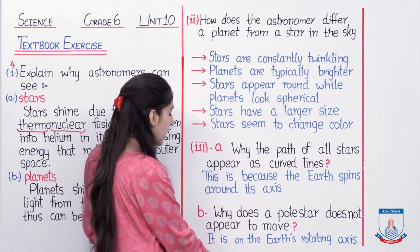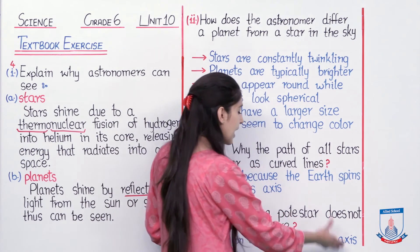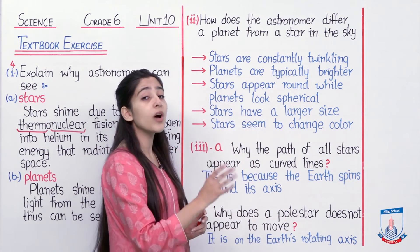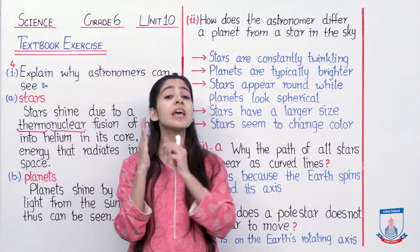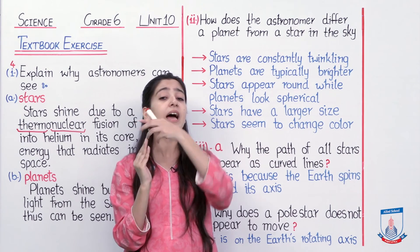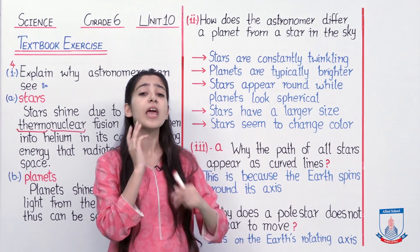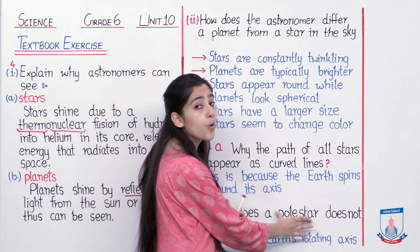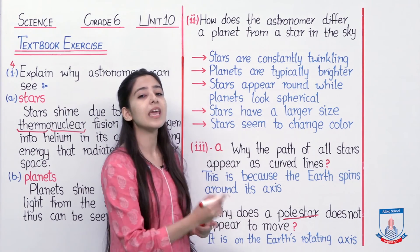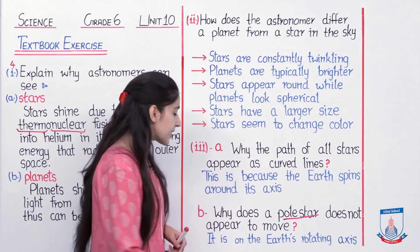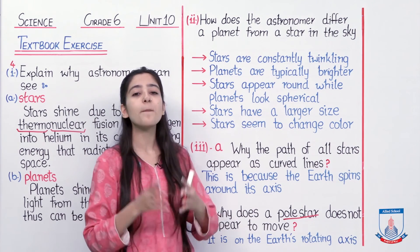Toh iske answer mein maine likha: it is on the earth's rotating axis. Iska matlab ke earth ka jo axis of rotation hai — jiske irgird earth rotate kar raha hai, toh bilkul jo top ki position hai, bilkul center ki position hai, wahan maujood hota hai hamaara pole star, aur yahi wajah hai ki pole star humein move karta hua nazar nahi aata. So this was the answer of part B of question number 3.